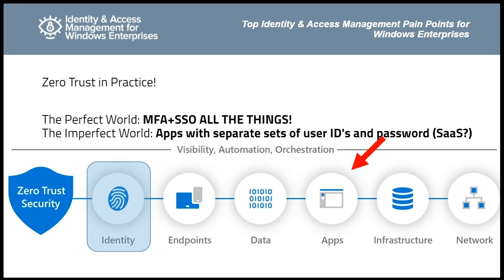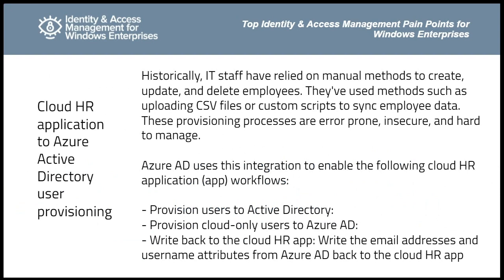We have an identity and access management crisis. The bad guys know about this — which is why cyber attacks focusing on brute force, password spray, and credential theft are so effective. Some appliances in place will give up credentials, which is not a good thing. We need to find a way to address this, and fundamentally this requires linking HR systems or ERP systems into Windows Active Directory.